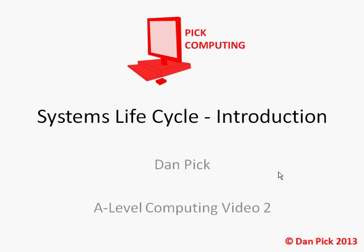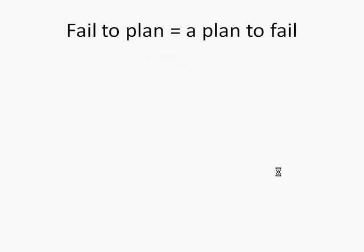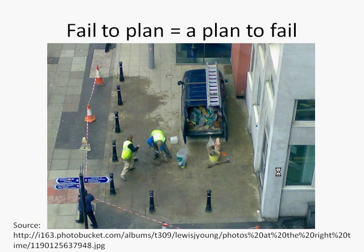Now the first thing to think about is why we need a systems life cycle and the reason is that failure to plan always equals a plan to fail as is shown in the image here. If you can't see where the huge planning flaw is here then just pause the video until you work it out.